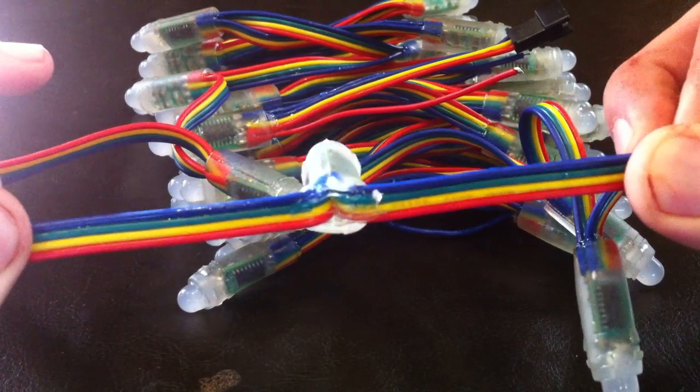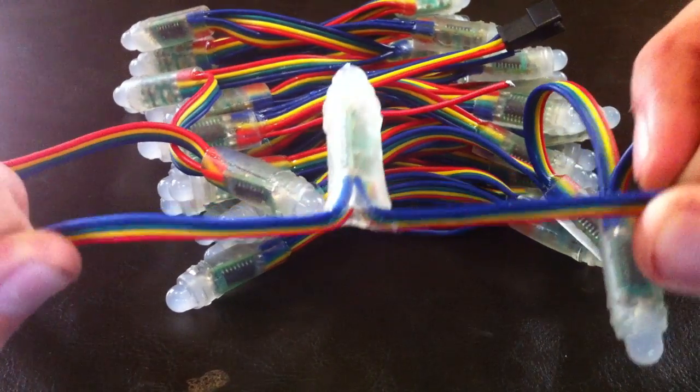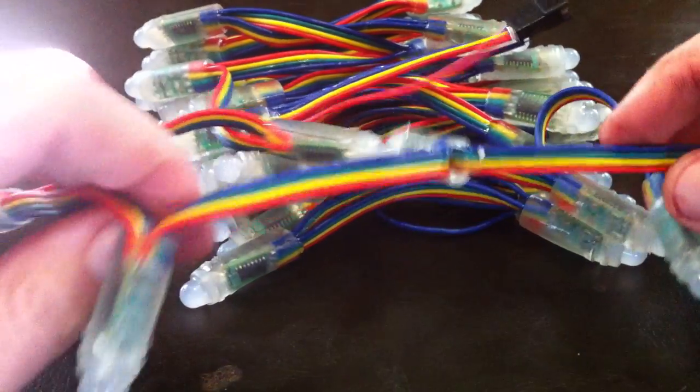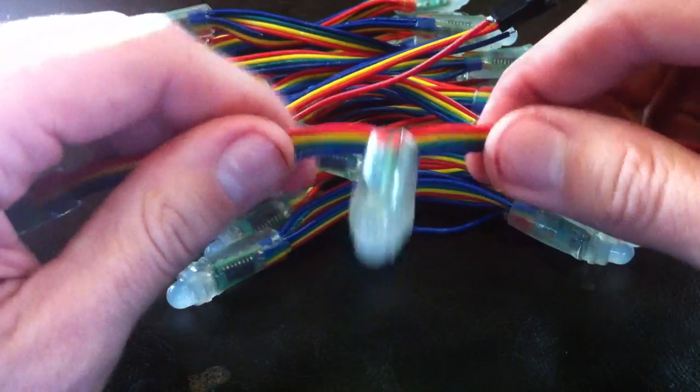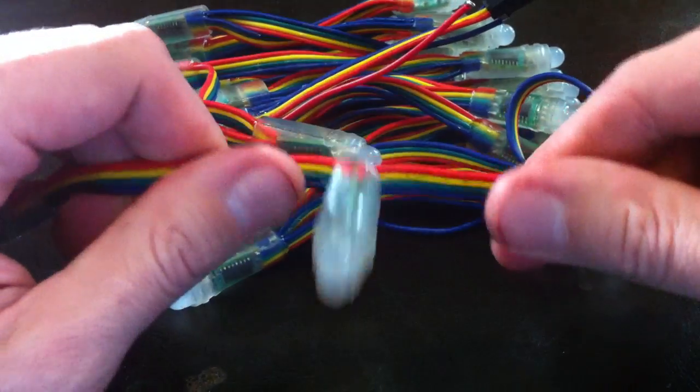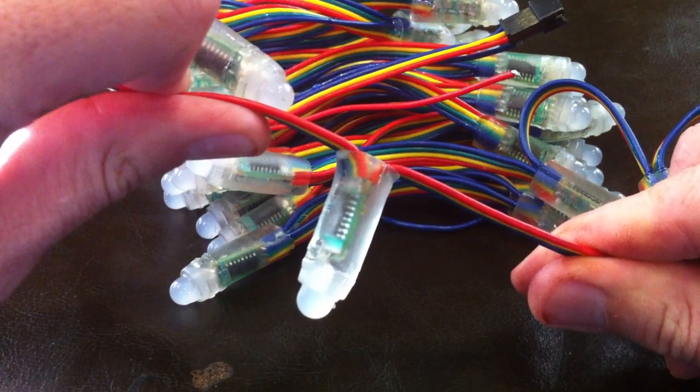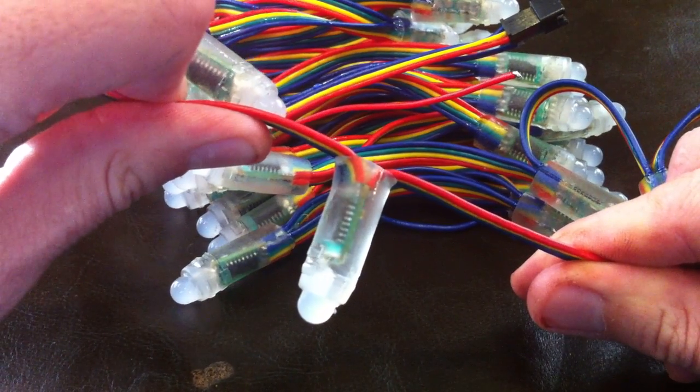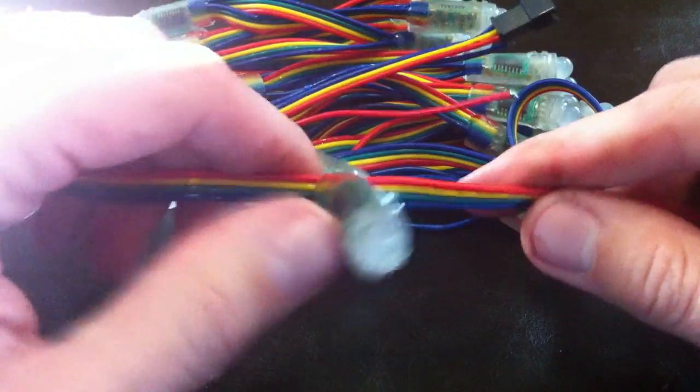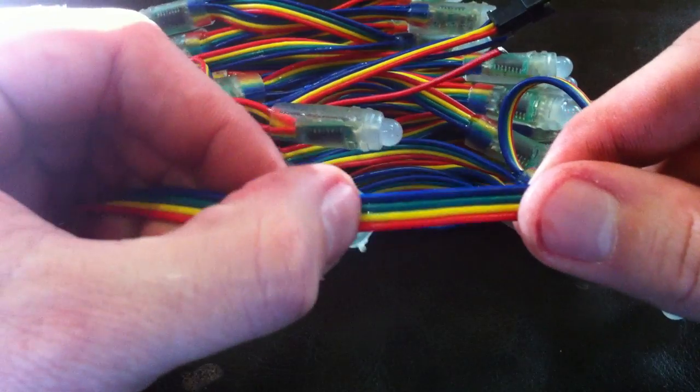If you wanted to use these like for a mega tree type application, just the weight of the string itself pulling from the top of the tree is gonna kind of pull on those a little bit. But the problem with these silicone filled ones is they're just soft, they come apart.